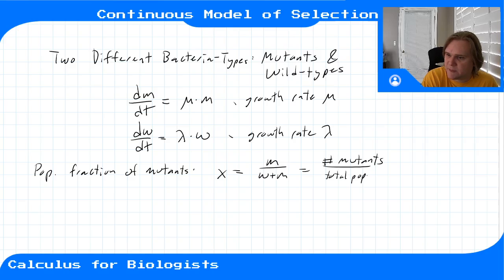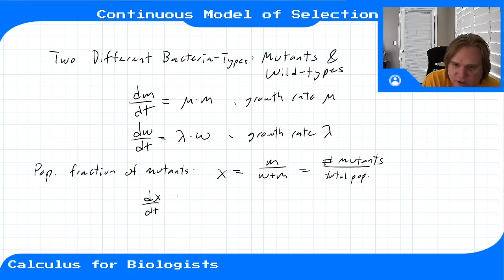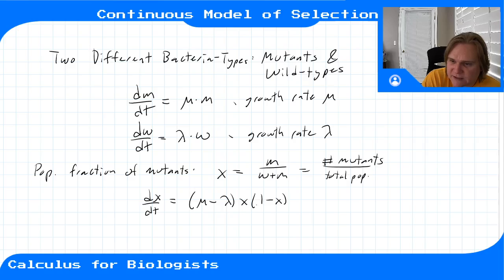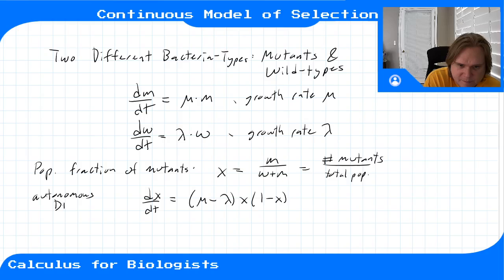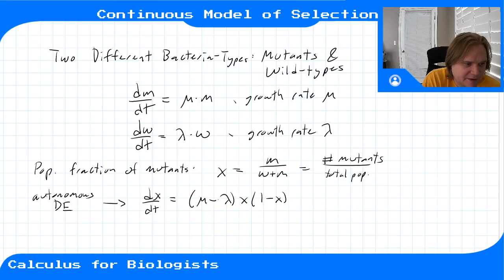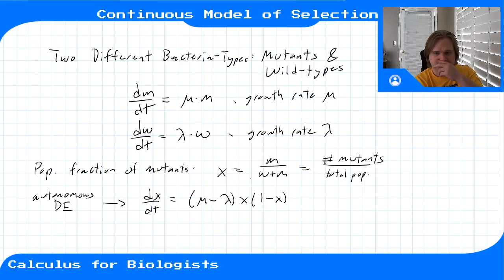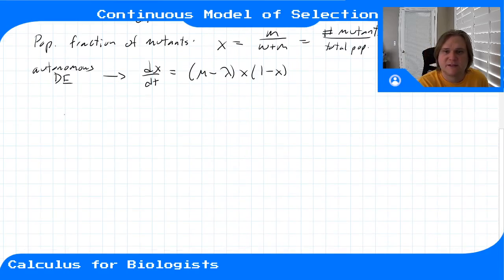It turns out that the differential equation for the mutant fraction looks like dx/dt = (μ − λ)·x·(1 − x). The factor (1 − x) is the non-mutant fraction. So the change in the mutant fraction is (μ − λ) times x, the fraction of mutants, times (1 − x), the fraction of non-mutants. This is our autonomous differential equation, and we want to analyze what happens to the mutant fraction x.